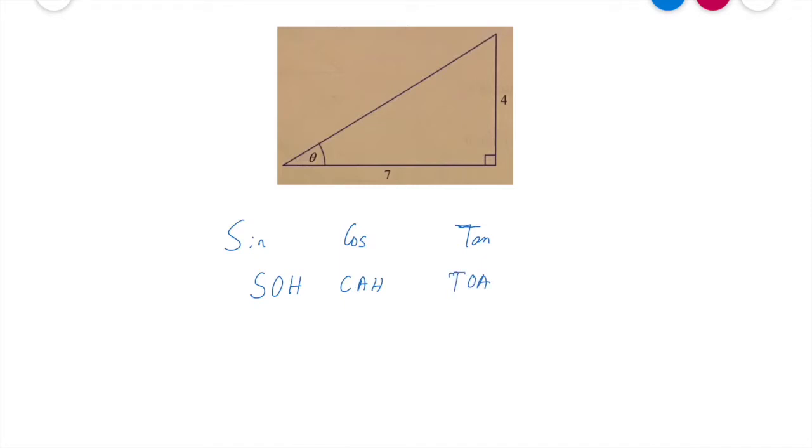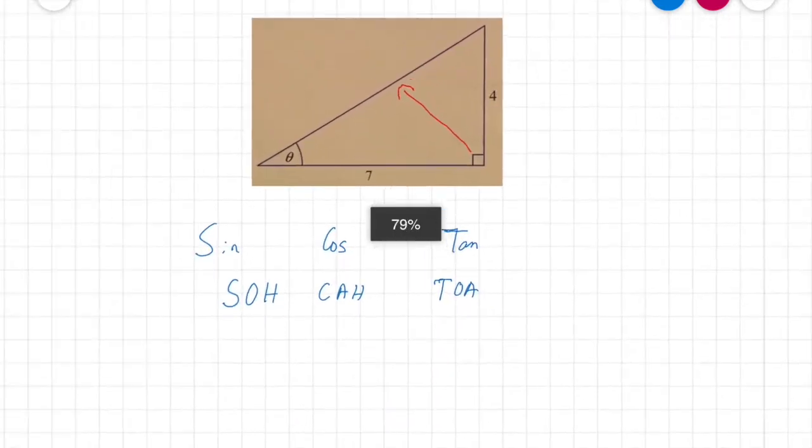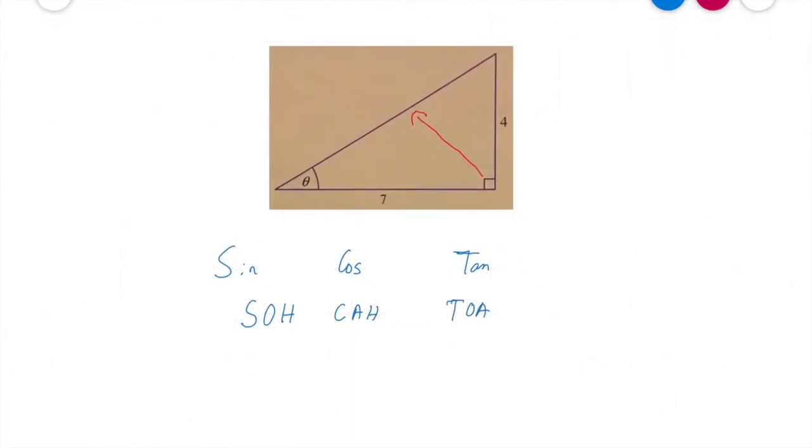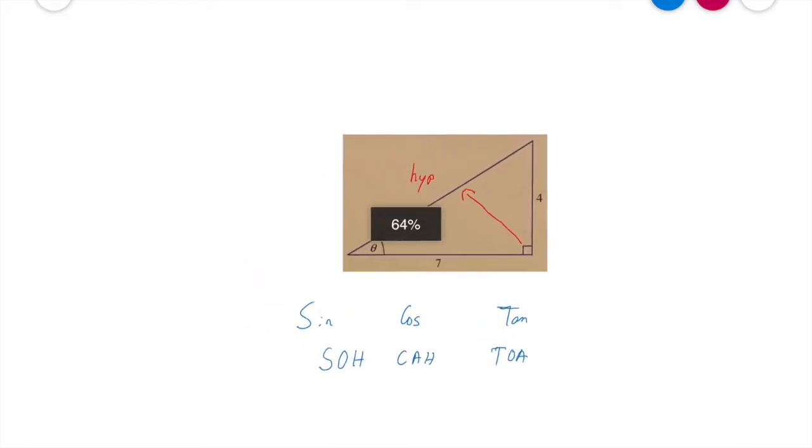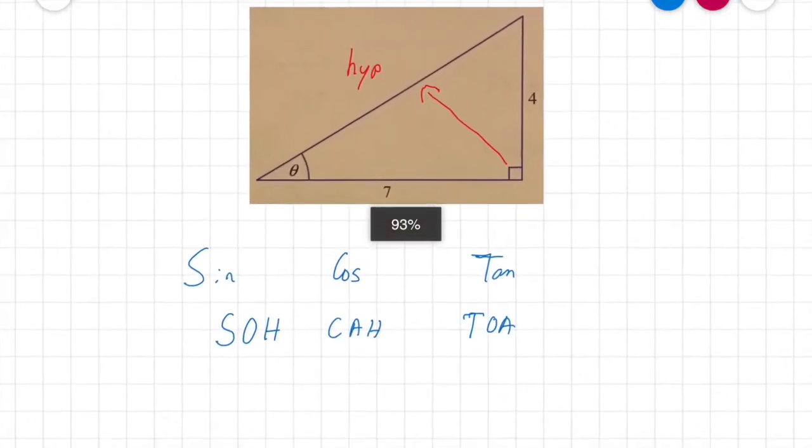So we need to figure out which side is the opposite, adjacent, and hypotenuse in this triangle. So let's go up here. Well in this triangle here we always remember that this side directly opposite our angle is called the hypotenuse.